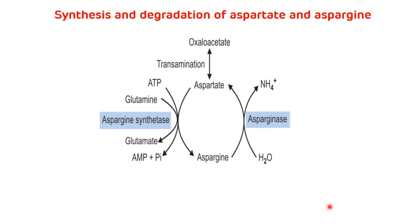Now, synthesis and degradation of aspartate and asparagine. Aspartate is synthesized from the intermediate of the TCA cycle, that is oxaloacetate, by a transamination reaction. Since it is a transamination reaction, it is reversible, so by the same reaction aspartate can be degraded back into oxaloacetate.